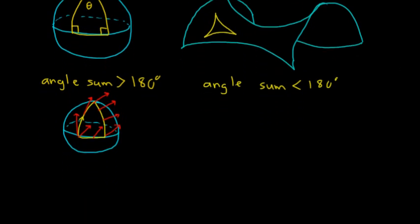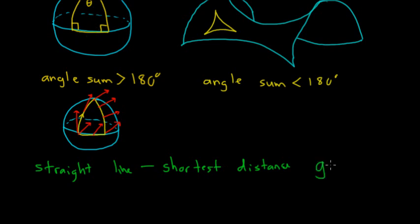So what can we still say is the same? Well, we still have the idea of a straight line. And that is going to be just the shortest distance between two points. So shortest distance between any two points. And the word that we're going to use to describe this on these kind of curved spaces is a geodesic.